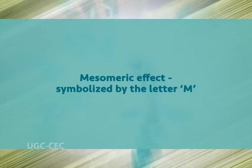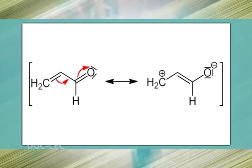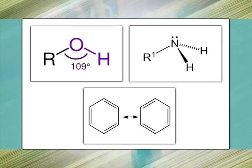The mesomeric effect in chemistry is a property of substituents or functional groups in a chemical compound. It describes the electron-withdrawing or electron-releasing properties of substituents based on relevant resonance structures, and is symbolized by the letter M. The mesomeric effect is a permanent effect that operates in compounds containing at least one double bond and another double bond or a lone pair separated by a single bond. It is negative when the substituent is electron-withdrawing and positive when it is electron-releasing. Examples of negative M substituents include acetyl, nitrile, and nitro; examples of positive M substituents include alcohol, amine, and benzene.